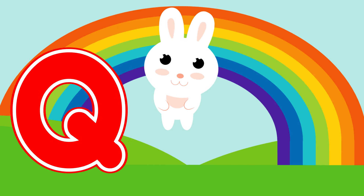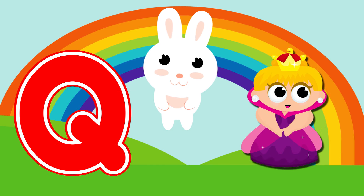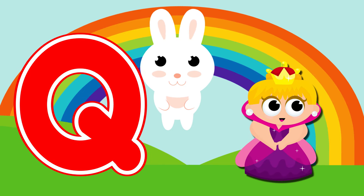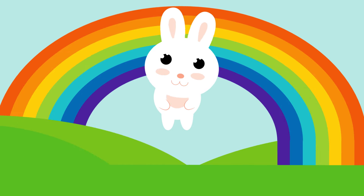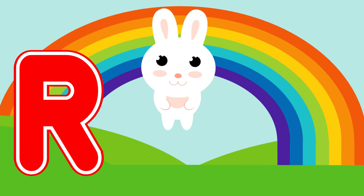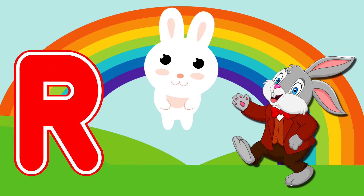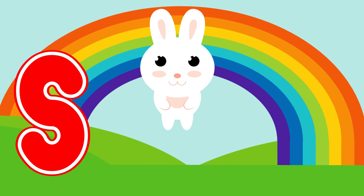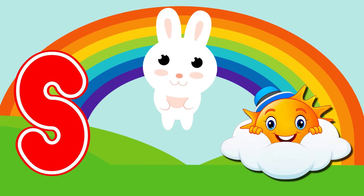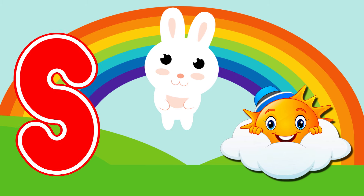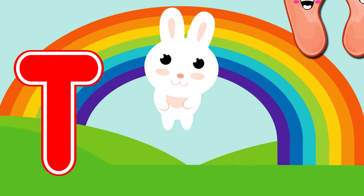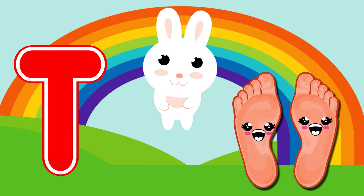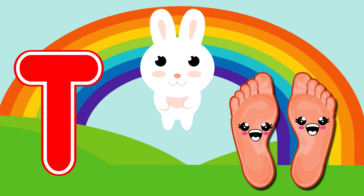Q is for queen, q-q-queen. R is for rabbit, r-r-rabbit. S is for sun, s-s-sun. T is for toad, t-t-toad.